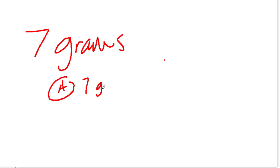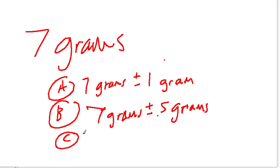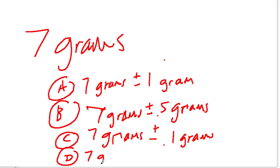They give us four choices. A says 7 grams plus or minus 1 gram. B says 7 grams plus or minus 0.5 grams. C says 7 grams plus or minus 0.1 grams. And D says 7 grams. D is out, because that implies it's completely accurate at exactly 7 grams, and that won't be the case. A is out as well, because rounding to plus or minus 1 gram is a really huge range — that's a little absurd.